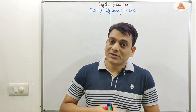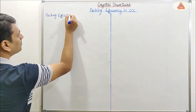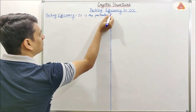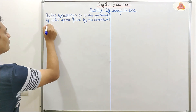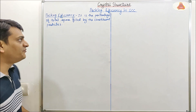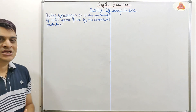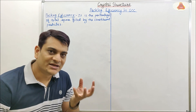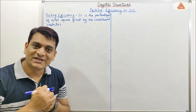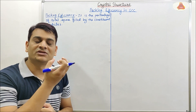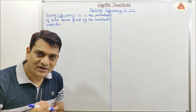Now coming to the definition of Packing Efficiency — it is the percentage of total space filled by the constituent particles. If we are having a unit cell, then constituent particles will be present in the corners of that unit cell because it is SCC. The percentage of those spheres or constituent particles present is known as Packing Efficiency.